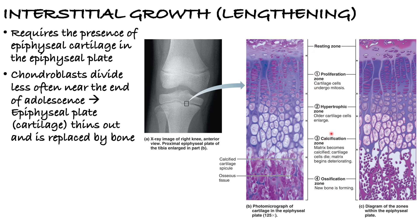The first active zone is the proliferation zone, where rapid growth takes place. New cells are moving upward, which pushes the epiphysis away from the diaphysis. The epiphysis is the ends of the bone — you have a proximal epiphysis and a distal epiphysis. In the proliferation zone, cartilage cells undergo mitosis, causing the lengthening of the bone.